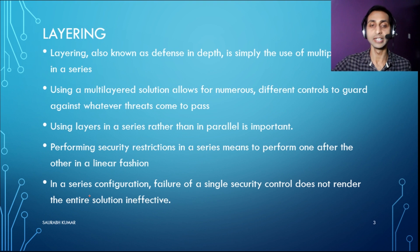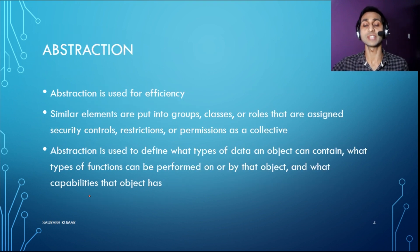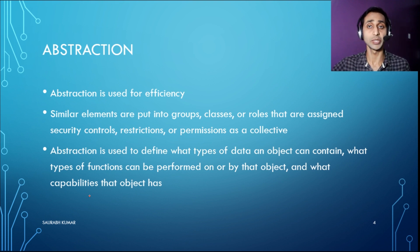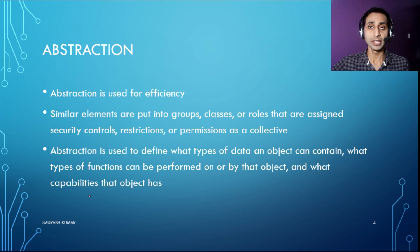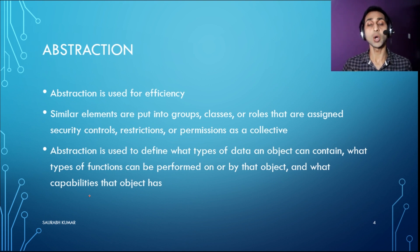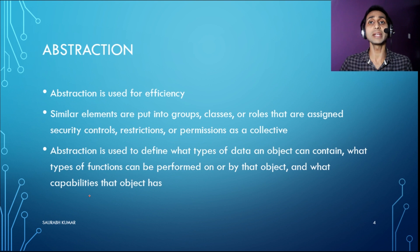Now we are going to talk about the second concept: abstraction. Abstraction means that whenever we want to implement any kind of security, the very first thing we must do is categorize our resources based on their security label and importance. Whenever we have a list of resources we categorize them — top secret, medium label, or low sensitivity. Based on that categorization and label, we can then implement appropriate security controls.